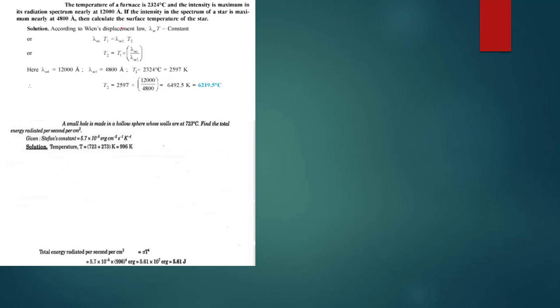According to Wien's displacement law, the product of wavelength maximum and absolute temperature is a constant. That means λ_max1 × T1 equals λ_max2 × T2, and so on to infinity. From here we can make T2 the subject.